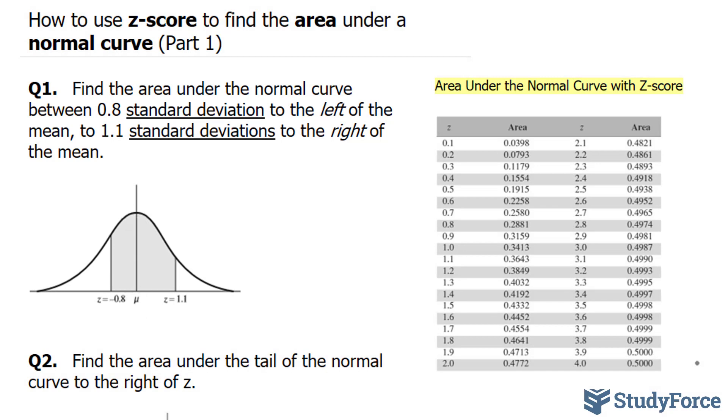So this line right here represents the mean. 0.8 to the left of the mean gives us a z-score of negative 0.8 and to the right of the mean gives us a z-value of 1.1. We need to find the area shaded.